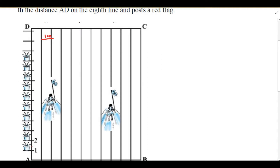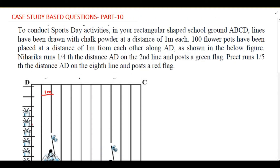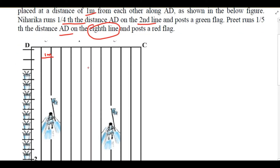The flower pots are along the line AD at a distance of one meter. Be careful — sometimes they can give two meters or three meters; according to that, you have to change your answer. Niharika runs one fourth the distance AD on the second line and posts a green flag. Now we'll read the question.